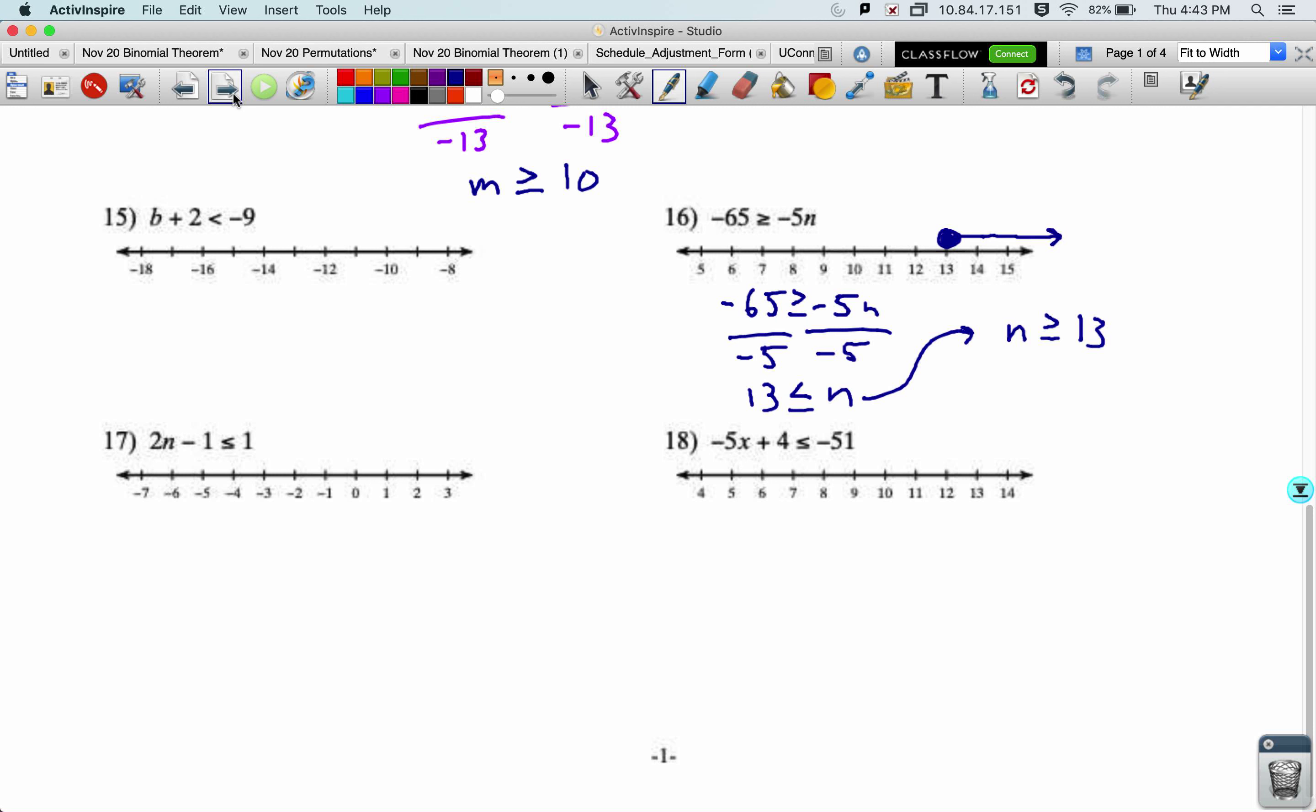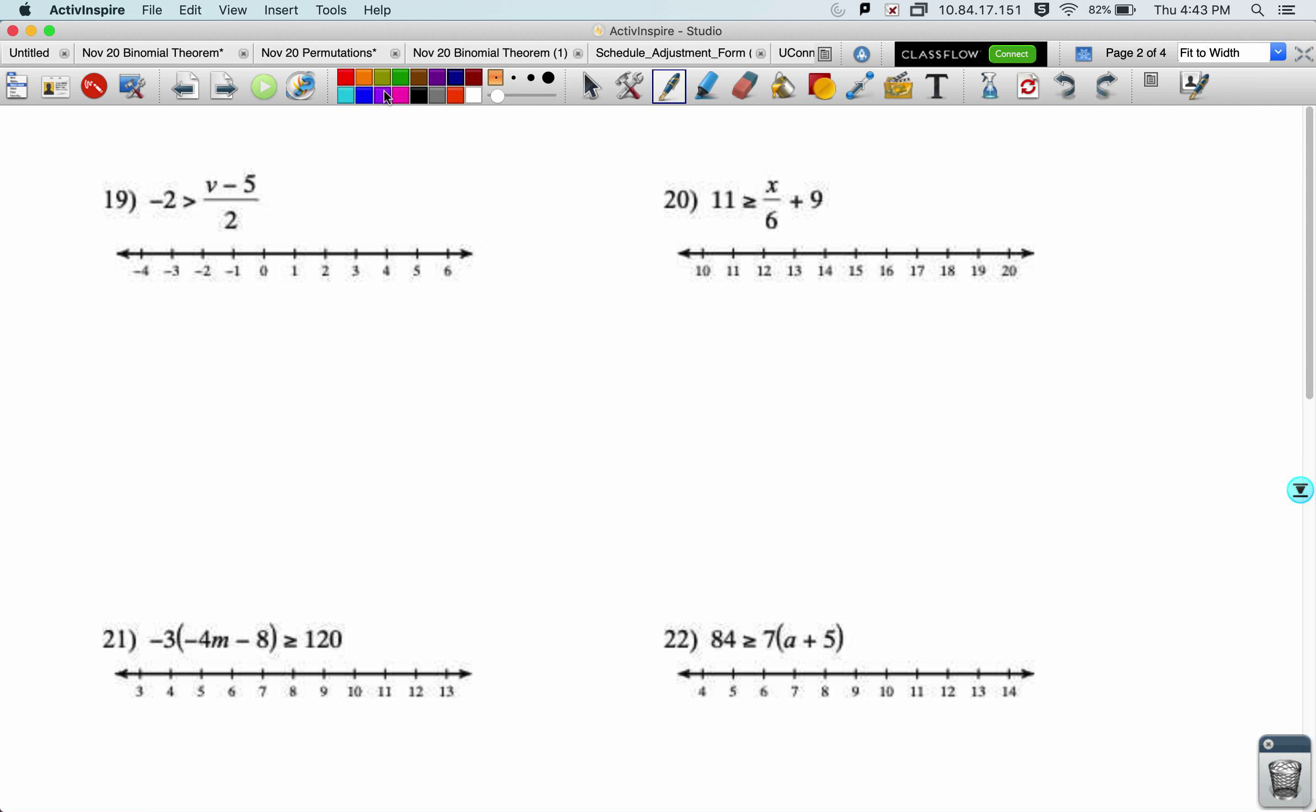All right, let's look at the back side. We've got some that have multiple steps. We'll start with number 19. Negative 2 is greater than v minus 5 over 2. I copied down with some space. The entire right-hand side is being divided by 2, and that's where my variable is. So I'm going to multiply the entire side by 2. Balance that by doing it on the other side, and that will cancel this divide by 2. Only multiply first if the entire side is being divided.